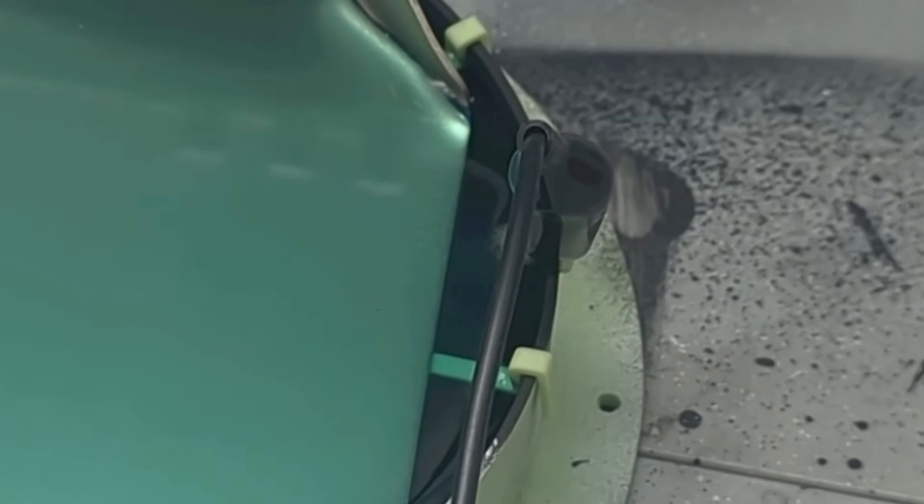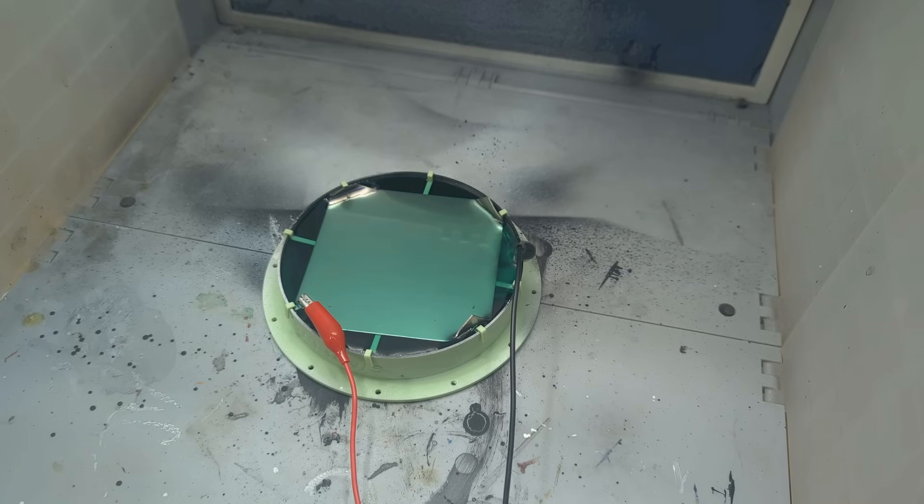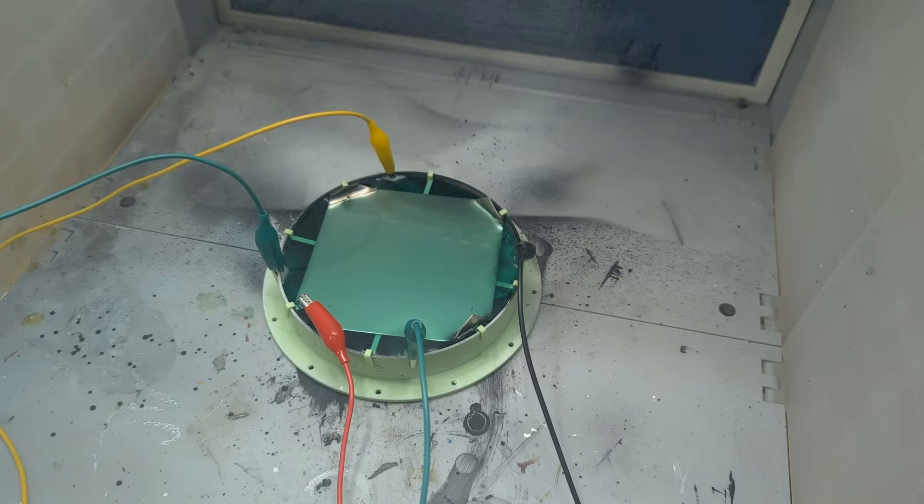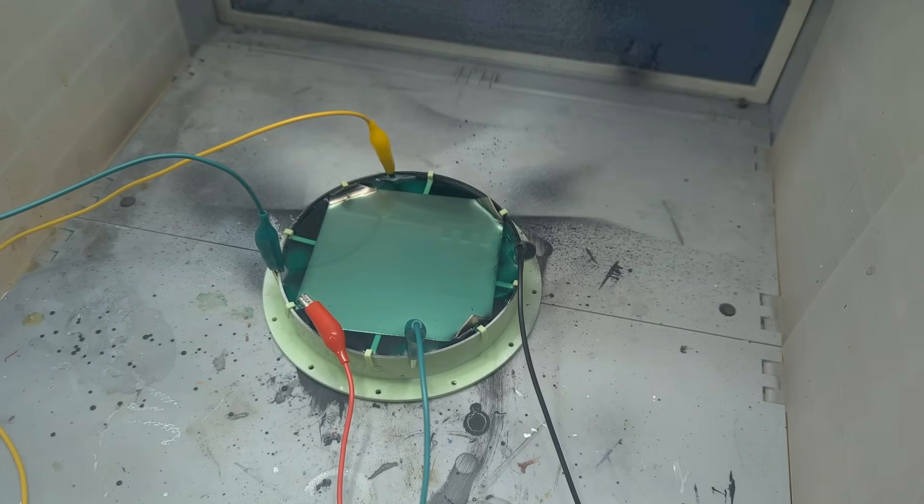I did see some bubbles forming around the leads, so I knew something was going on, but I didn't see any changes to the surface of the mirror. About an hour later though, I did begin to see some metal spots growing outwards from the leads, so I left it to run overnight.